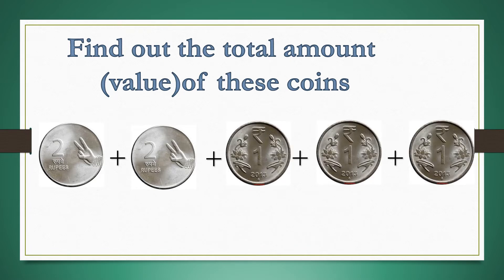Another example: there are 2 rupee coins — 2 coins — and 1 rupee coins — 3 coins. So, 2 plus 2 is 4; 4 plus 1 is 5; 5 plus 1 is 6; 6 plus 1 is 7. So, 7 rupees in all.